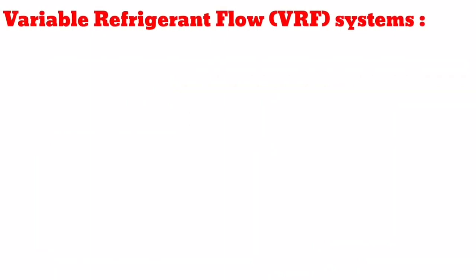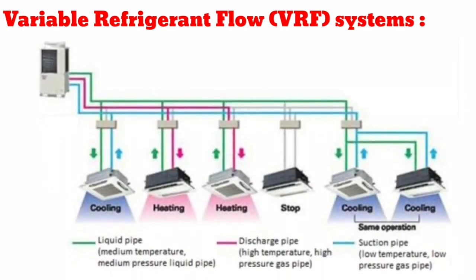Variable refrigerant flow VRF systems are similar in appearance to multi-split air conditioners. What makes the difference is the number of indoor units and the control function. A multi-split system is generally limited to about 10 indoor units, whereas VRF systems can connect to more than 50 indoor units on a single outdoor condensing unit. VRF systems use proprietary temperature control devices for efficient flow of refrigerant, with temperature control available at every indoor unit, and the outdoor unit adjusting compressor load based on heat load from various units.